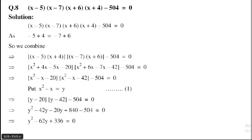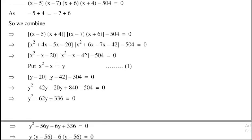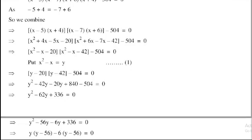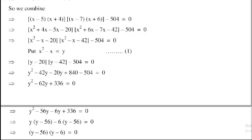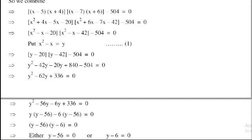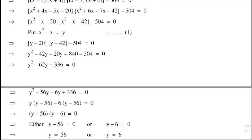Expanding: y² minus 42y minus 20y plus 840 minus 504 equals 0, which gives y² minus 62y plus 336 equals 0. Factoring: split minus 62y as minus 56y minus 6y. Taking common y from first two terms: y(y minus 56), and minus 6 from last two terms: minus 6(y minus 56) equals 0. So (y minus 56)(y minus 6) equals 0, giving y equals 56 and y equals 6.